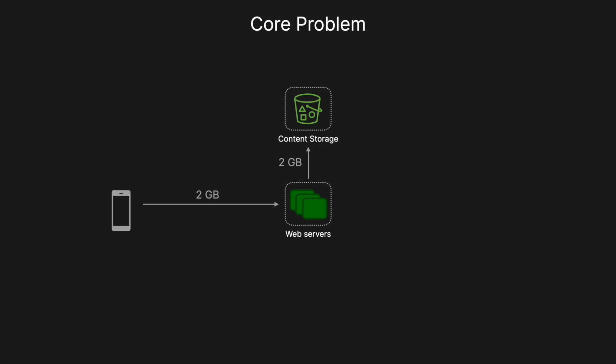If we have a shared workspace — similar to Google Drive shared drives — we'd also have to send those 2GB to all other users in that workspace. As our estimates showed, that won't scale at all and will become a massive bottleneck. The solution is to introduce blocks: breaking files into chunks of about 4 megabytes each. This means only the changed block needs to be sent, significantly reducing data sent and stored, though it introduces complexity around reconstructing blocks into the original files.